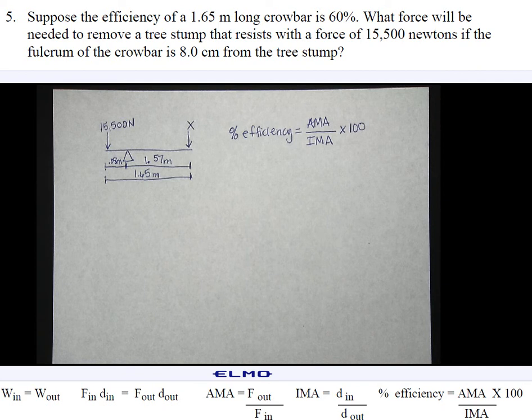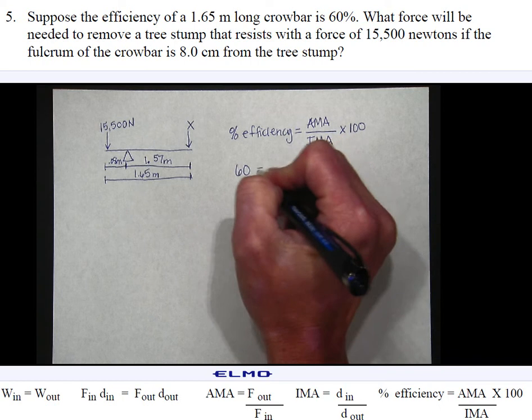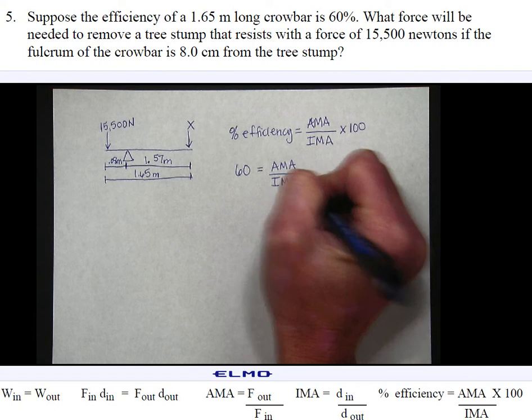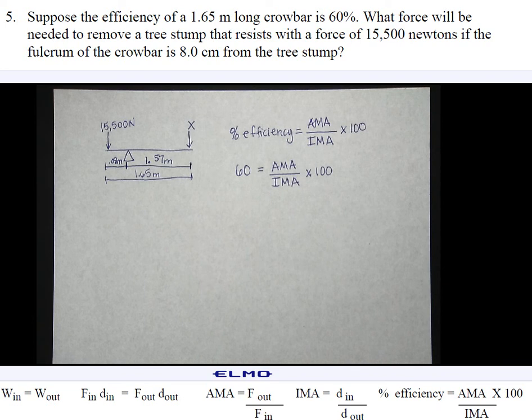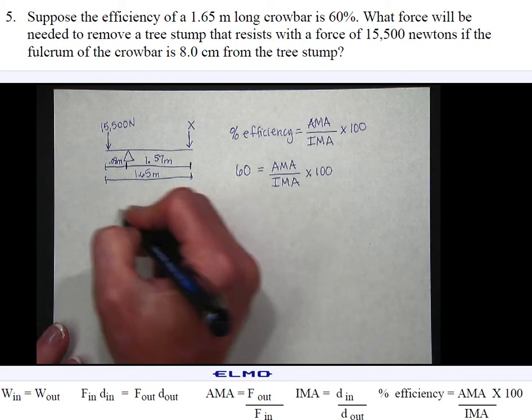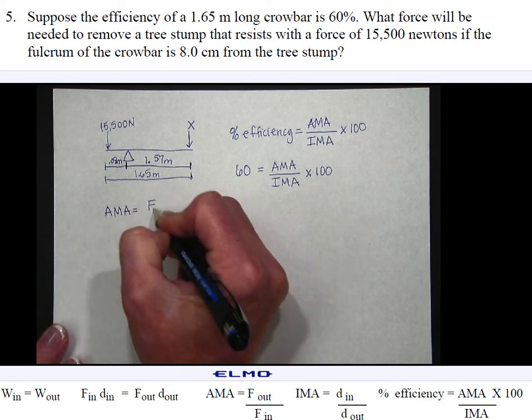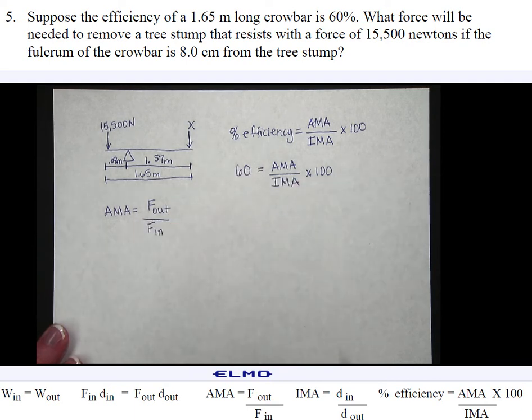I'm going to substitute in information that I do know. So right now I know that my percent efficiency is 60. Right now I don't know my actual mechanical advantage nor do I know my ideal mechanical advantage, but I do notice at the bottom of the screen that I do have formulas for those. So I'm going to start with actual mechanical advantage over here to the side.